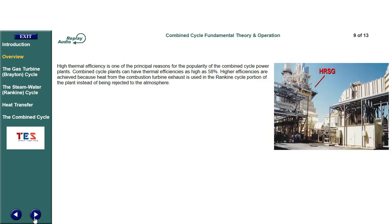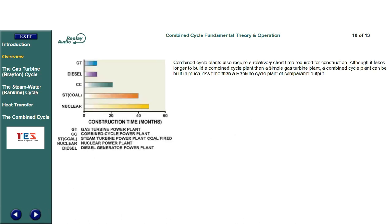High thermal efficiency is one of the principal reasons for the popularity of combined cycle power plants. Combined cycle plants can have thermal efficiencies as high as 58%. Higher efficiencies are achieved because heat from the combustion turbine exhaust is used in the Rankine cycle portion of the plant instead of being rejected to the atmosphere. Combined cycle plants also require a relatively short time for construction. Although it takes longer to build a combined cycle plant than a simple gas turbine plant, a combined cycle plant can be built in much less time than a Rankine cycle plant of comparable output.